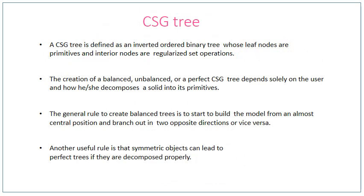The constructive solid geometry tree is defined as an inverted ordered binary tree whose leaf nodes are primitives and interior nodes are regularized set operations. The CSG tree can be obtained by the primitives and their operations. Whether the tree is balanced, unbalanced, or perfect depends solely on the user and how they decompose a solid into its primitives, which will be discussed in the next slide.